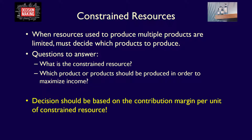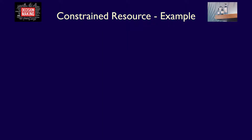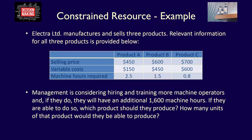The best way to demonstrate the impact of a constrained resource and the impact of sales mix is through an example. Electra Limited manufactures and sells three products. Product A has a selling price of $450, variable costs of $150, and requires 2.5 machine hours to produce.